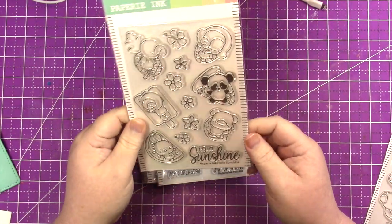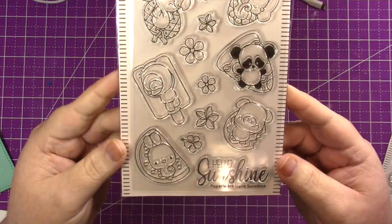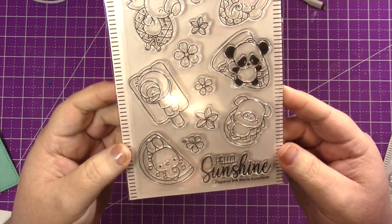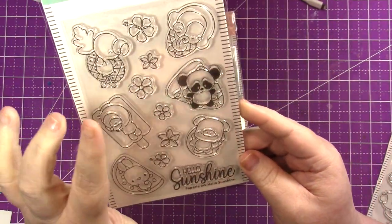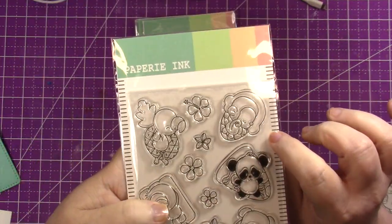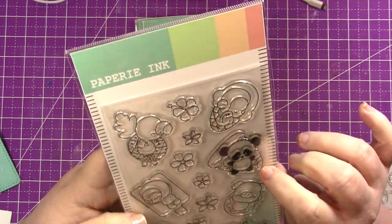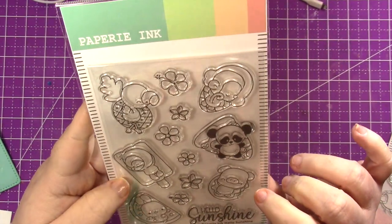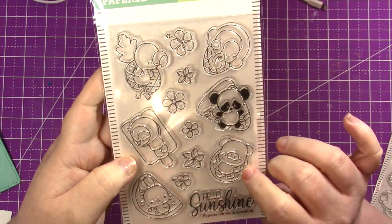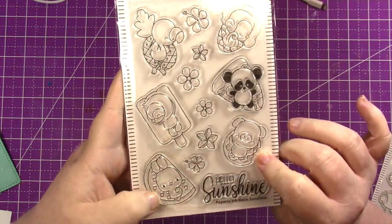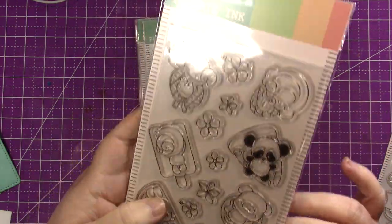This one is called Hello Sunshine. So again, kind of the same thing. They're all on floaties, like food floaties. Look at the little monkey on the ice cream. Got a flamingo on a pineapple, you got a panda on a pizza, a pig on a donut, you got the sloth on the popsicle and the bunny on a watermelon slice. That's pretty cute.